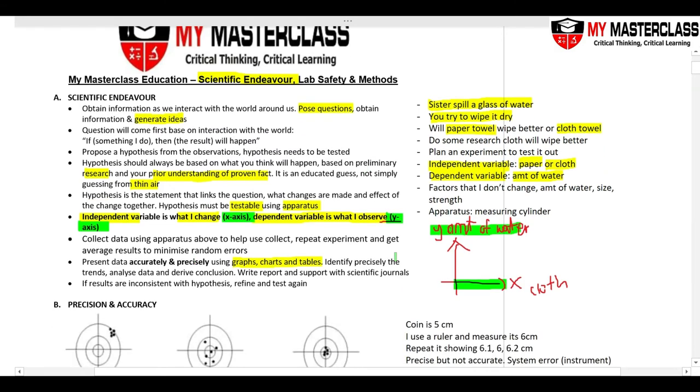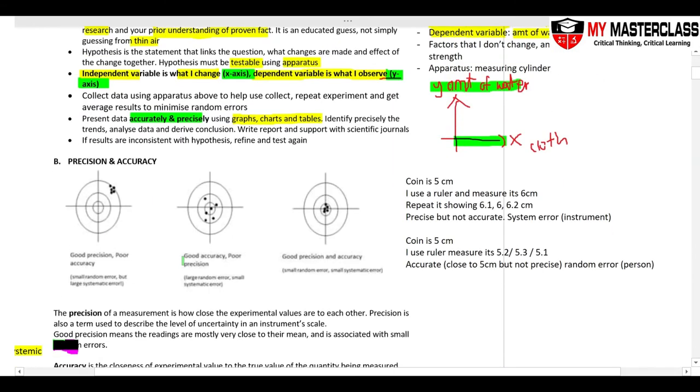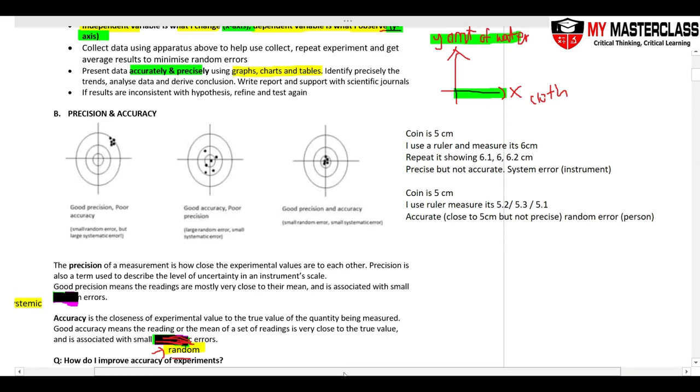When we present the data or information, we have to present it accurately and precisely. So let's look at these two terms: precision and accuracy.